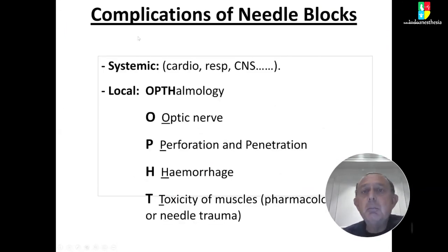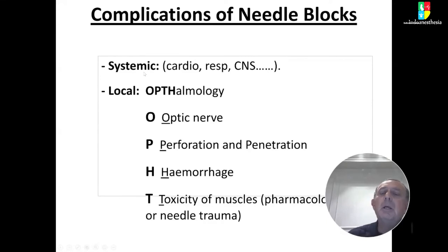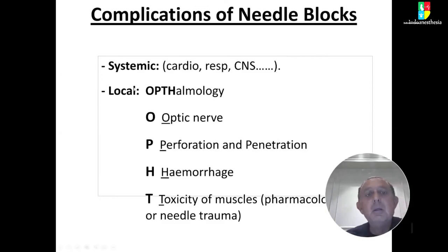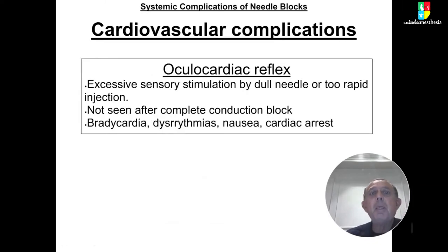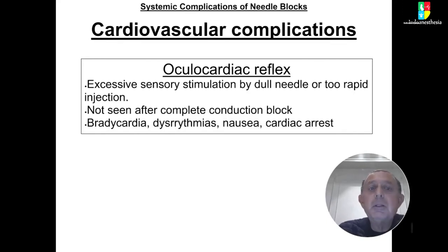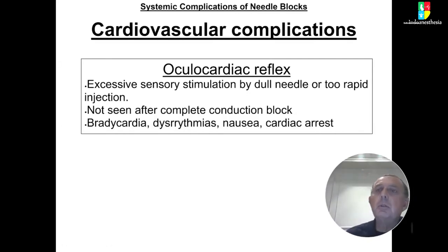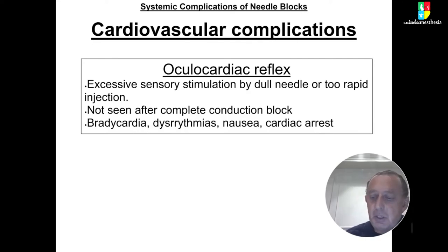Complications of needle blocks are classified as systemic and local. Systemic complications are rare and include cardiorespiratory and CNS problems. For simplicity, local complications can be remembered with the acronym OPTH: O for optic nerve damage, P for perforation and penetration, H for hemorrhage, and T for toxicity of muscles. Systemic complications include the oculocardiac reflex — triggered by excessive needle sensation or rapid injection — causing bradycardia, dysrhythmias, nausea, and up to cardiac arrest. When using needle blocks, always have a resuscitation trolley and emergency medications nearby.